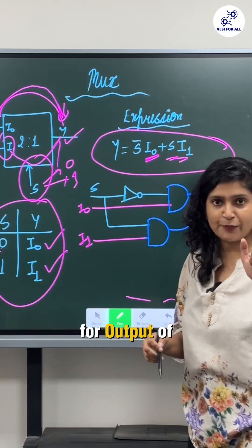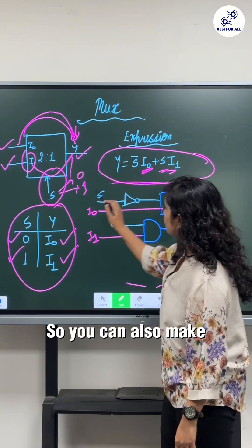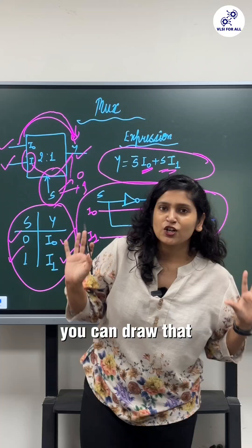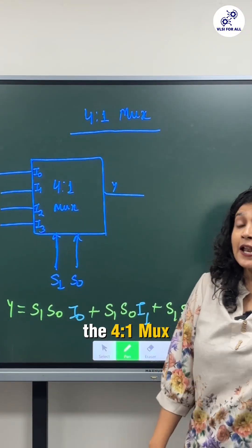You can also make this circuit very easy with the help of basic logic gates, you can draw that. Now coming to the 4:1 mux, if suppose you are giving an example that you have to quickly write the expression for a multiplexer, how will you write?